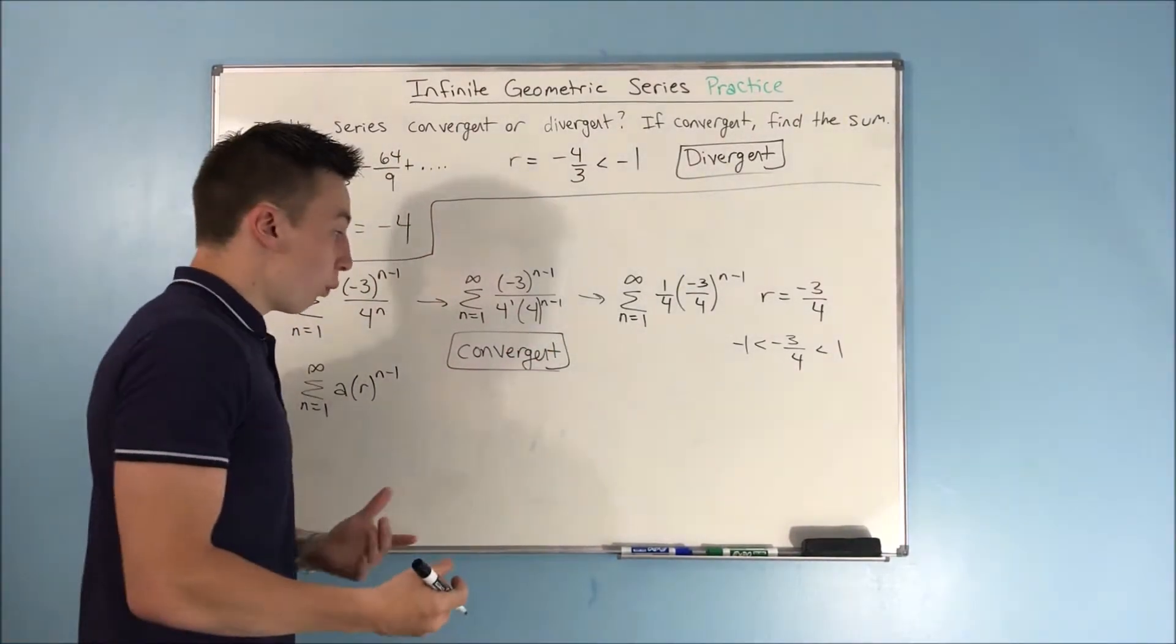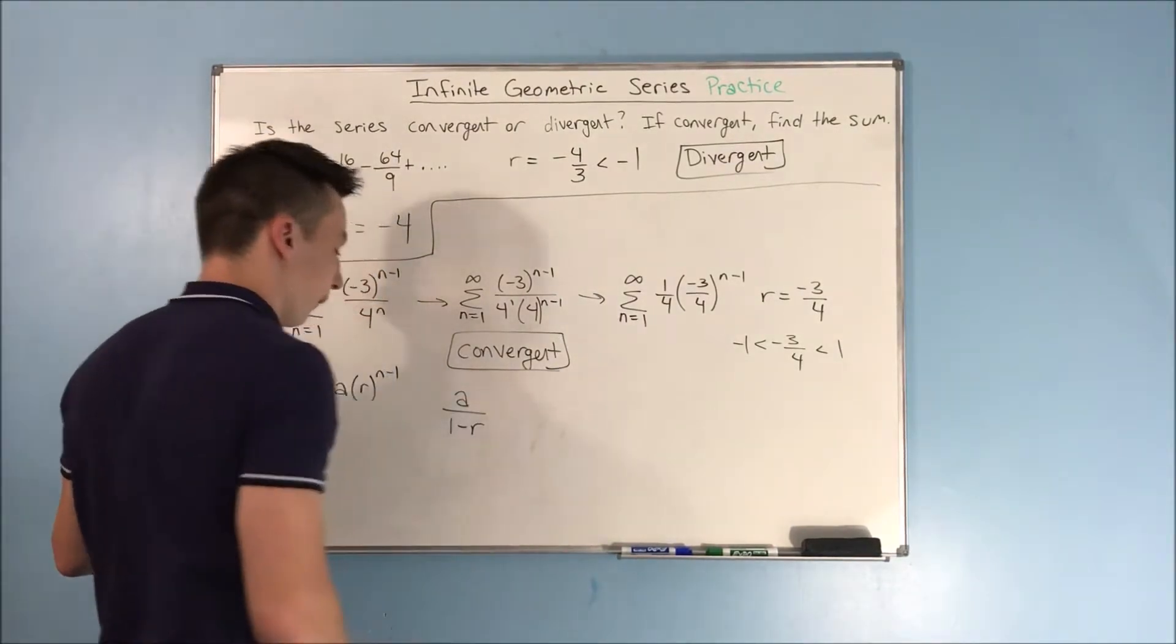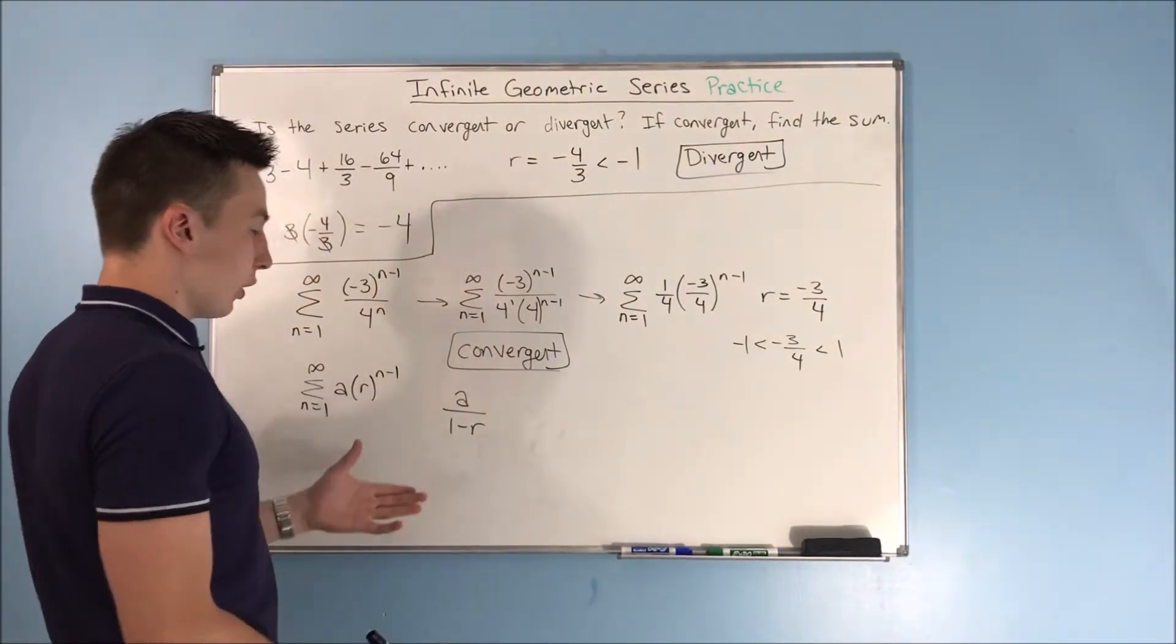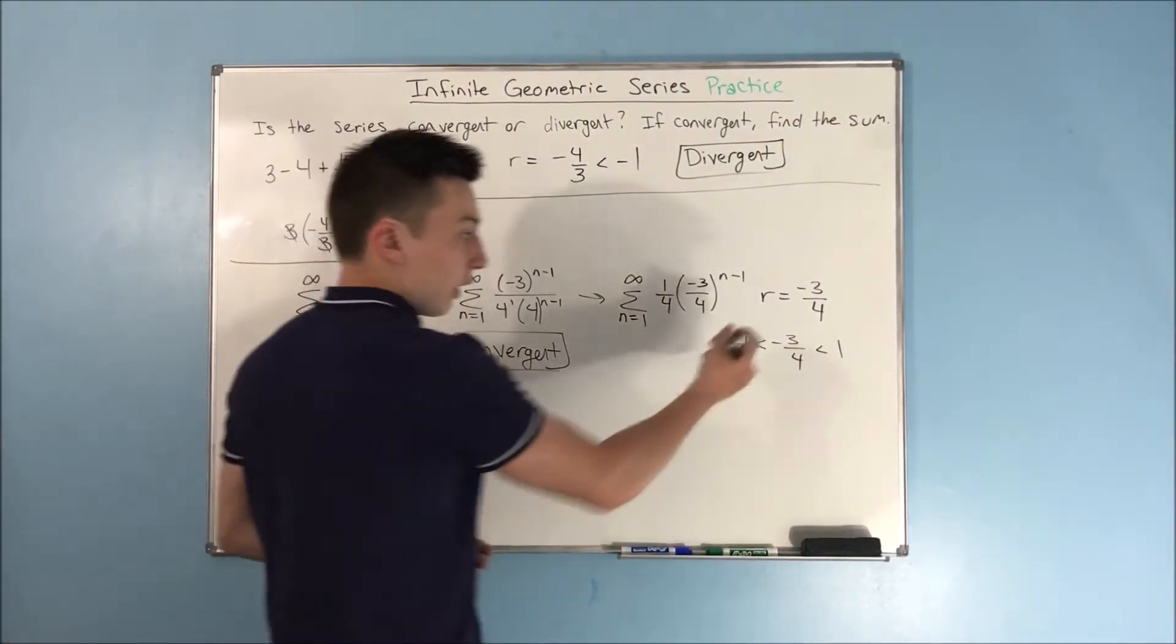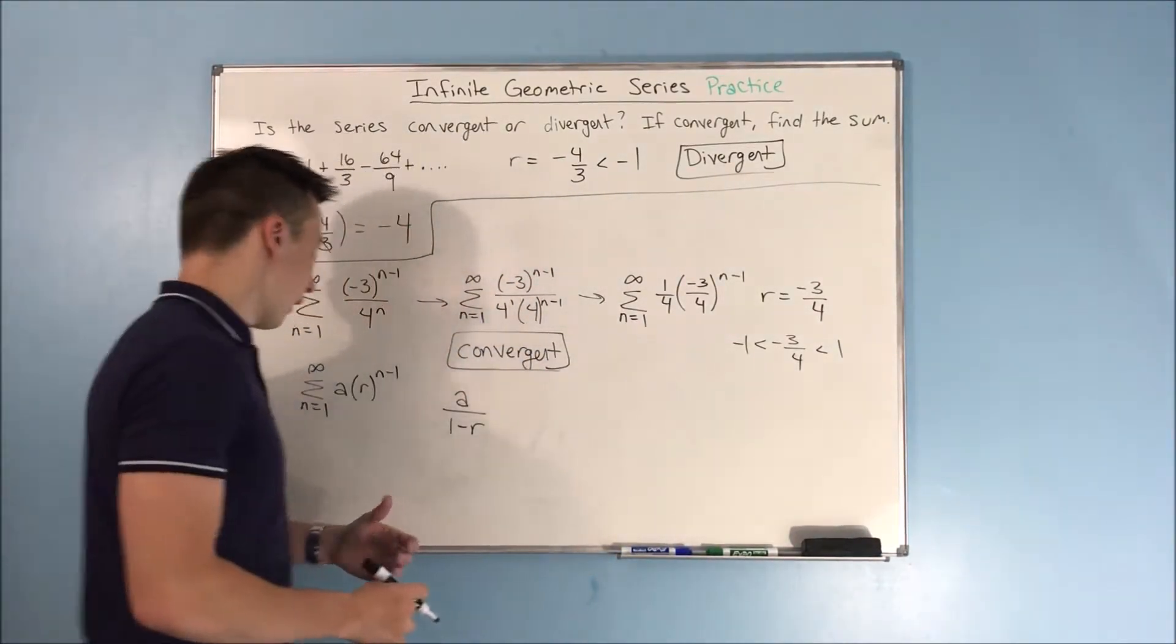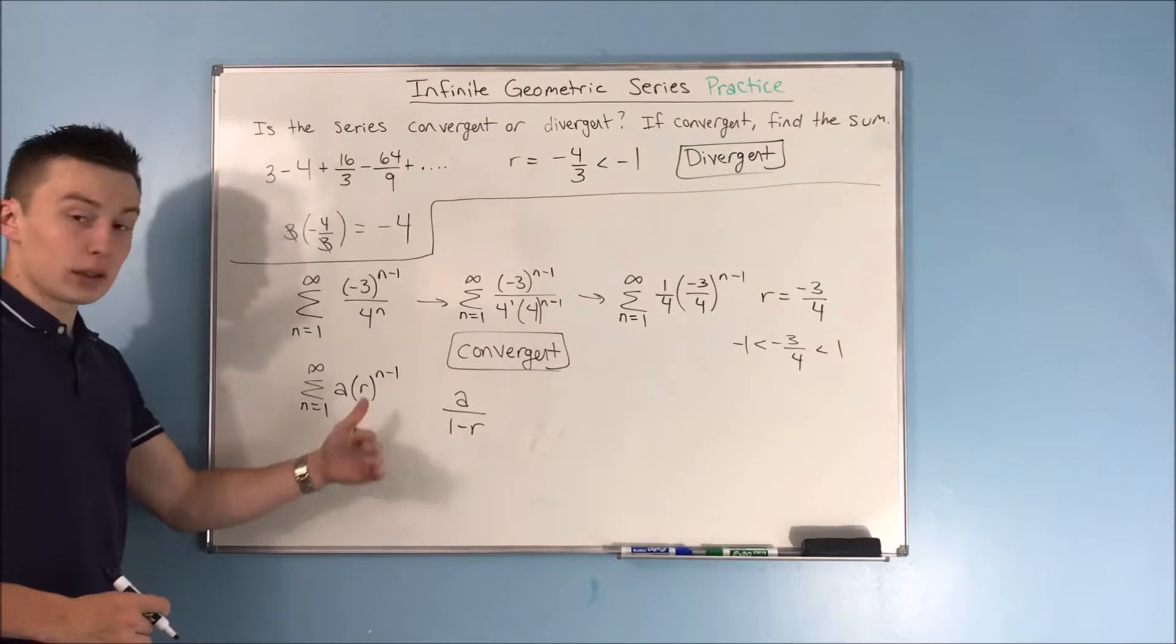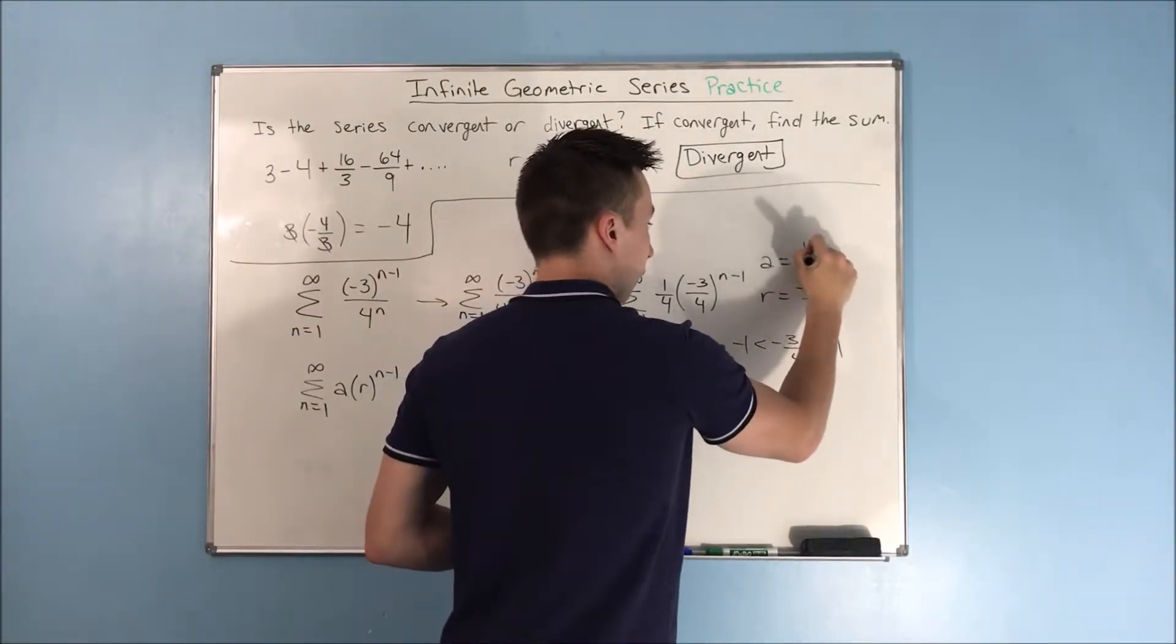How do we find the sum? Well, we just use a over 1 minus r. And if we want to use a over 1 minus r, we need to figure out what our a is. We already know that our r is negative 3 over 4, but our a is going to be what's in front of that. Remember, it's a times r to the n minus 1. So, our a is going to be 1 fourth.